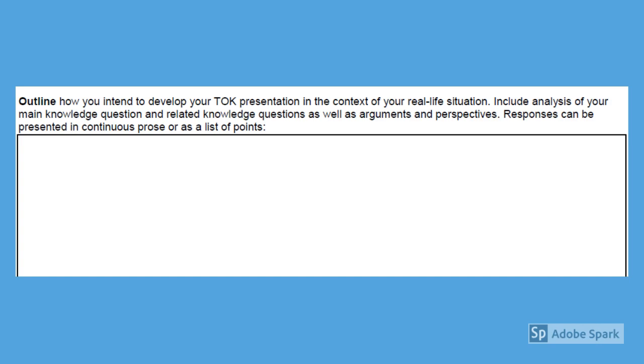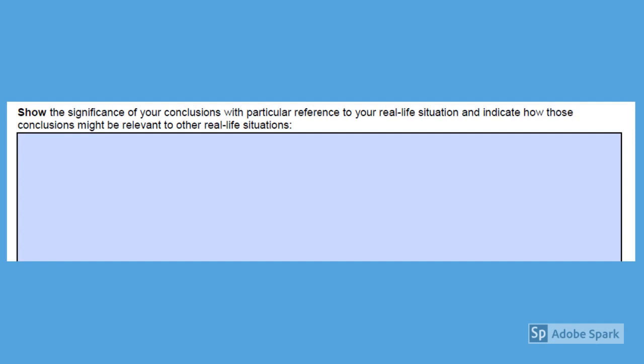Here you give an overview of the whole presentation. You must include your analysis of the main knowledge question and show the different arguments and perspectives you will refer to. You must also include your conclusion here. This can be written as continuous prose or a list of bullet points. In the final part of the form, you have to explain how your conclusion can be related back to the real life situation you started with and other real life situations.